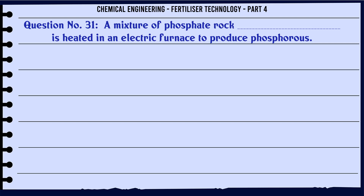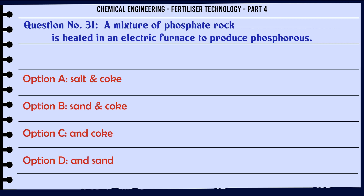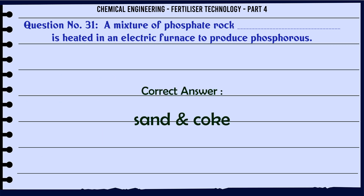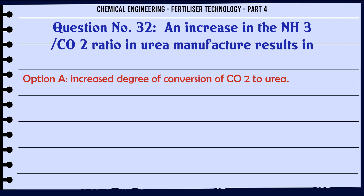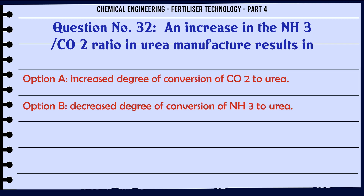A mixture of phosphate rock is heated in an electric furnace to produce phosphorus with: a. salt and coke, b. sand and coke, c. N and coke, d. N and sand. The correct answer is: sand and coke.